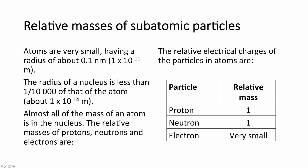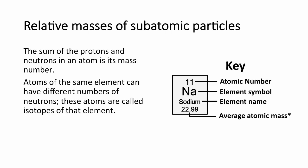The relative masses of subatomic particles are: protons have a mass of one, neutrons have a mass of one, and electrons do have a mass but it is incredibly small — approximately 1/1860. The sum of the protons and neutrons in an atom is called the mass number. Atoms of the same element can have a different number of neutrons — remember, all atoms of the same element have the same number of protons, so the only reason they could have a different mass is because they have a different number of neutrons.